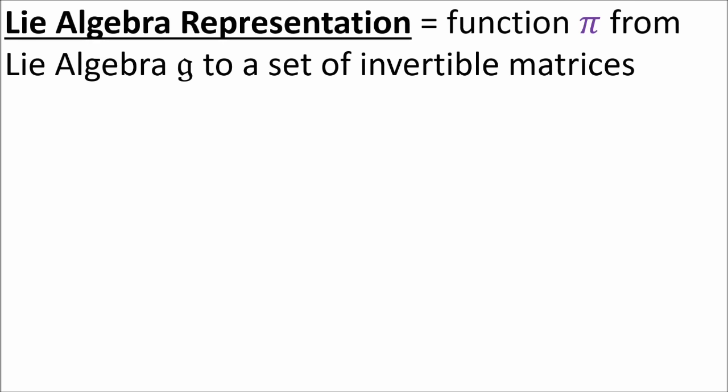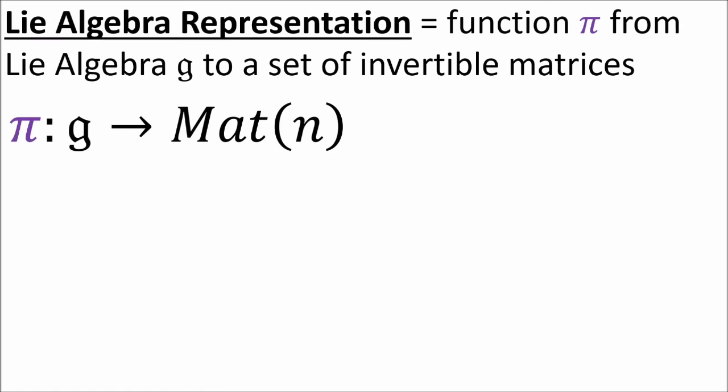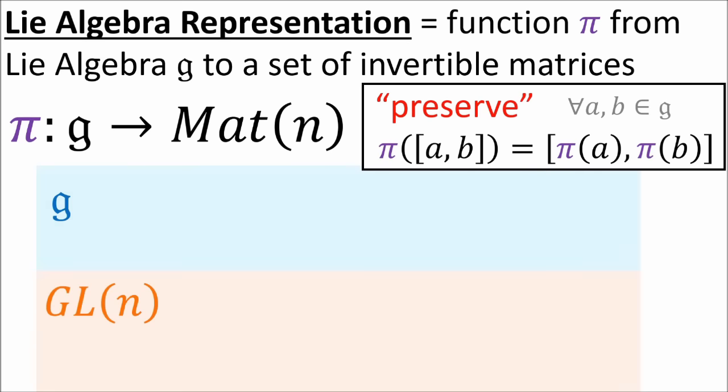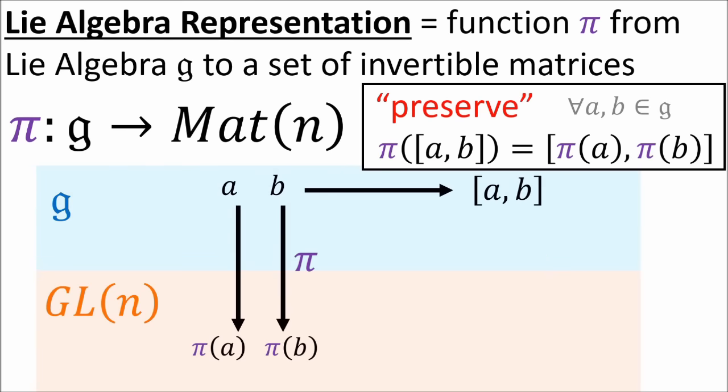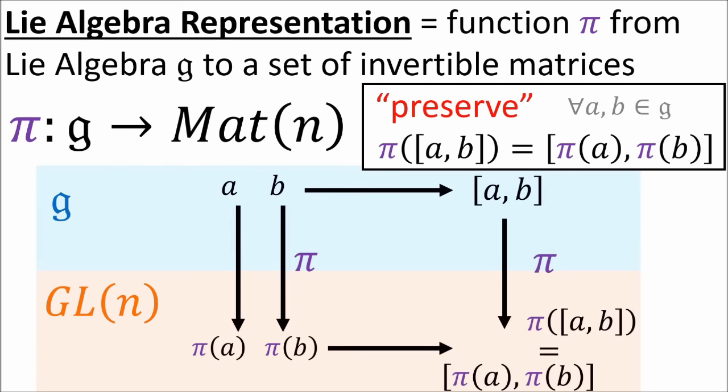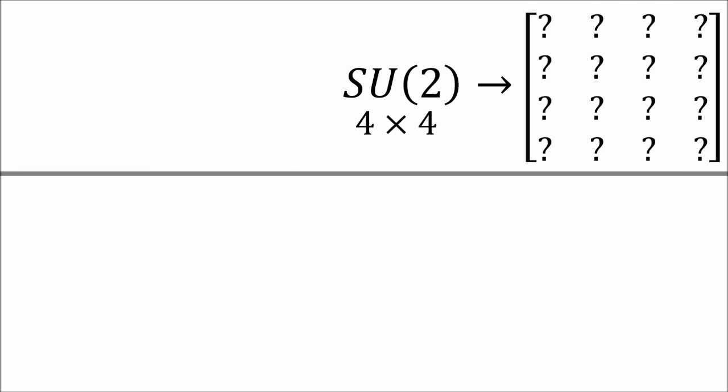It's also possible to map pairs of SU2 matrices each to an SO3 matrix, so the group SO3 is a 3 by 3 representation of SU2. Some of the group structure is forgotten here because it's an irreversible 2-to-1 mapping. The 1 by 1 representation of SU2 sends all matrices to the 1 by 1 identity matrix — all the group structure is forgotten, but it still technically preserves all the multiplication rules. We can also define representations for Lie algebras, which is a function pi that sends Lie algebra members to n by n matrices, and the function pi must preserve the Lie bracket of the algebra.